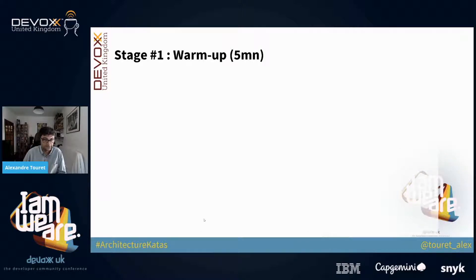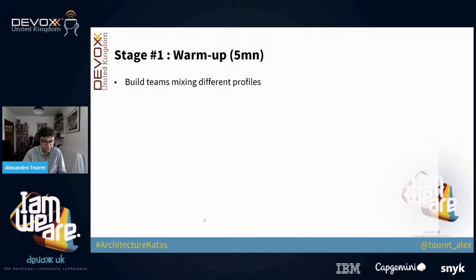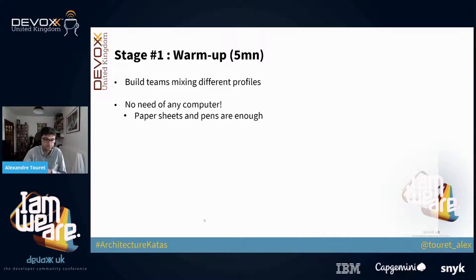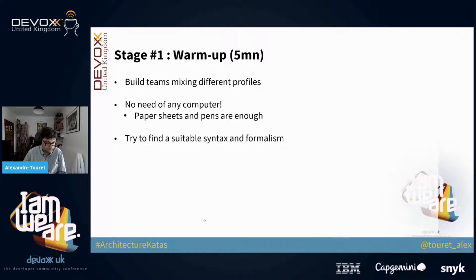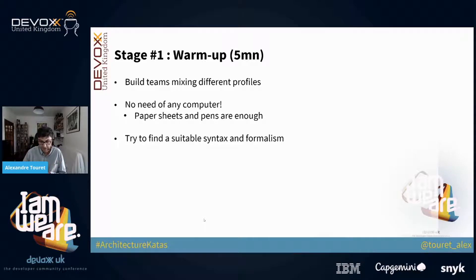If you want to organize a kata, the first stage is the warm-up — about five minutes. You build teams by mixing different profiles. You don't need any computer, just paper sheets and a pen. And as George discovered in the story, communication is really important, so you try to find a suitable syntax and formalism. You can use UML, or whatever you want — just boxes and arrows is fine.